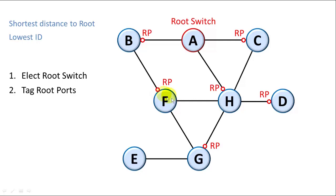G again, we have two options. One of them is shorter. So we choose the route through H, and we label this the root port. And E has only one port. So we label that the root port.